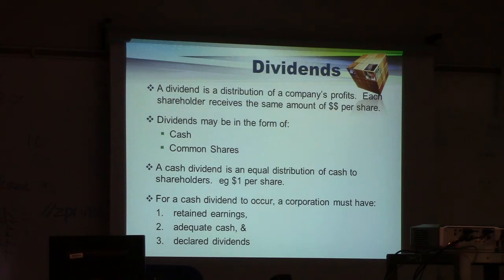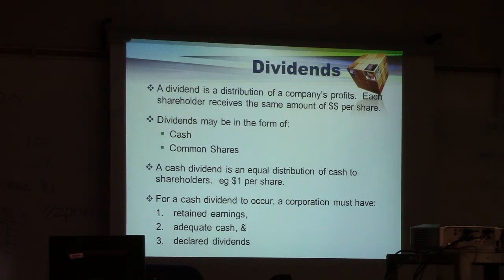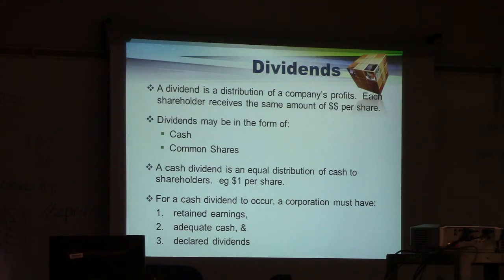For a cash dividend to occur, a company must have three things. Number one, it must have retained earnings. Retained earnings are basically an accumulation of all the net incomes or losses from the beginning of the company. The net income is closed into retained earnings at the end of every period. If you have incomes, retained earnings increase; if you have losses, retained earnings decrease. Number two, you must have actual cash to pay — if you don't have enough cash, you can't pay a cash dividend.